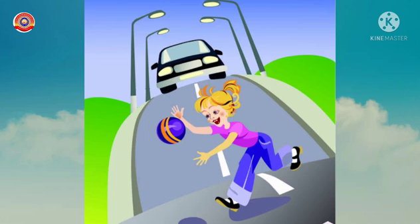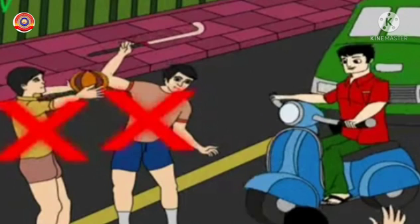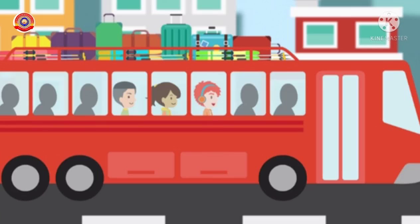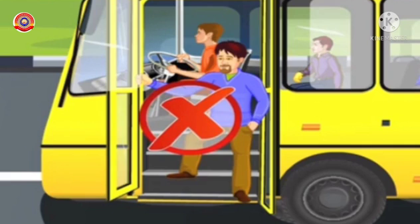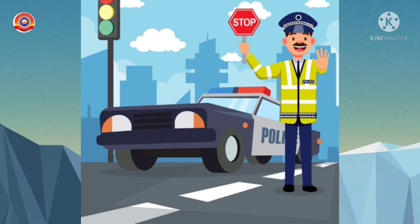The next road safety rule is: we should not play on roads. The next one: when we go by bus, we should not stand on the footboard. Traveling on the footboard is very dangerous. So if we are traveling by bus, we should not stand on the footboard.